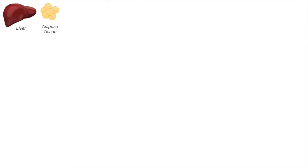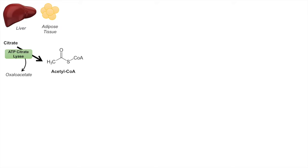Fatty acid synthesis occurs in two primary locations in the body: one in the liver, the other in adipose tissue. This all occurs in the cytosol, and because of that, we require acetyl-CoA in the cytosol. Acetyl-CoA is typically in the mitochondria and cannot leave the mitochondrial matrix, which means it has to be brought out in a different form — and that form is citrate. Citrate is transported out of the mitochondria and can be acted on by the enzyme ATP-citrate lyase, releasing oxaloacetate and forming acetyl-CoA. This is how we get our cytosolic supply of acetyl-CoA.